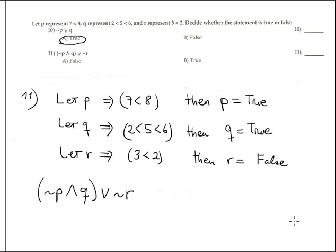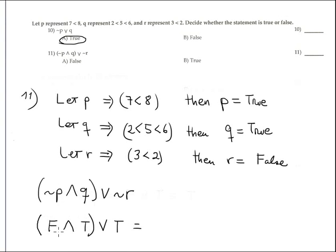Number eleven uses the same three statements but a different expression. Negation P is false, conjunction Q — Q is true — is false. False disjunction negation R — R is false, so negation R is true — gives false disjunction true, which is true. True corresponds to option B.